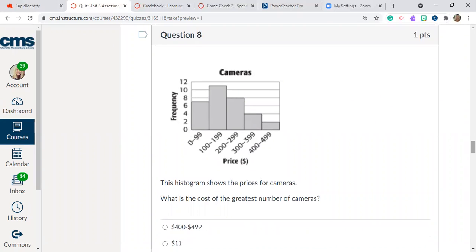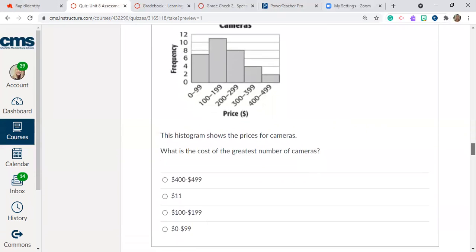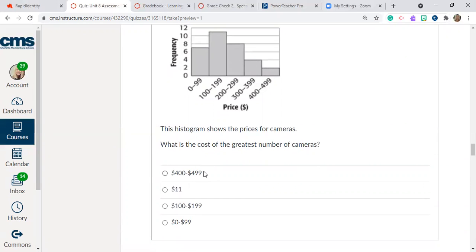Question number eight. This histogram shows the prices for cameras. What is the cost of the greatest number of cameras? So here we have the frequency and then we have the price down here. So 0 to 99, 100 to 199, 200 to 299, 300 to 399, and then 400 to 499. So what is the cost of the greatest number of cameras? Is it 400 to 499, $11, 100 to 199, or 0 to 99?